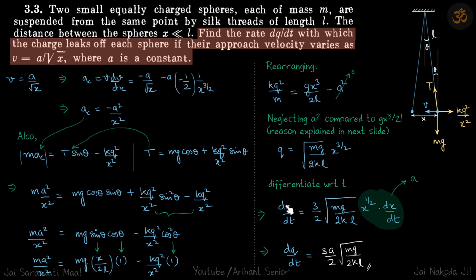If we differentiate this because we want dq by dt, that will become 3 by 2. This 3 by 2 will come out times this constant into x power half into dx by dt. We differentiate this with respect to x first and then dx by dt generally.